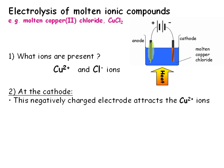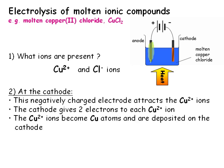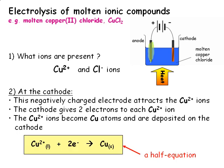A different reaction happens at each electrode — there are really two reactions going on at the same time. The Cu²⁺ ions are attracted to the negative electrode. The electrode gives two electrons to each Cu²⁺ ion, turning each into a copper atom. In this way, a layer of copper metal begins to grow on the surface of the cathode. The element copper is being formed.